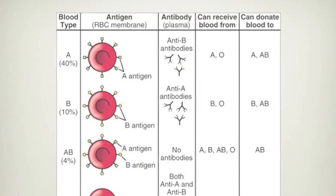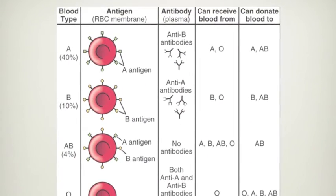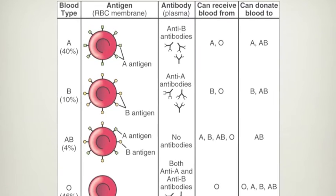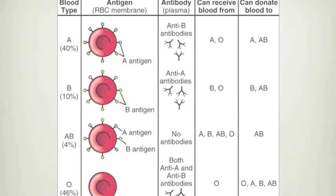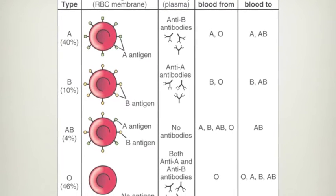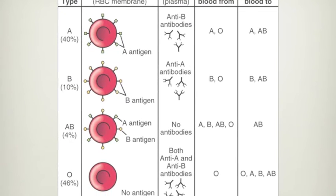In this figure, you can see that each blood type can receive from certain people and can donate to others, and in most cases they are not the same.